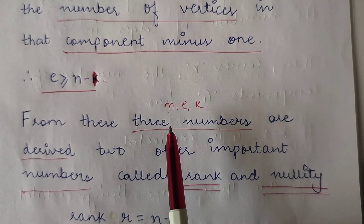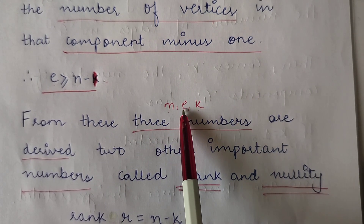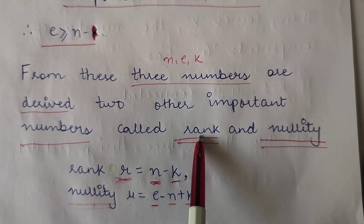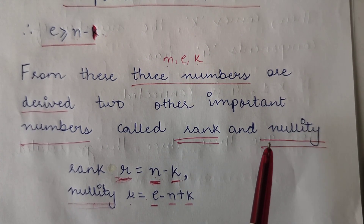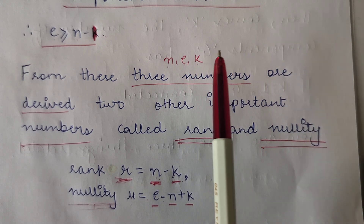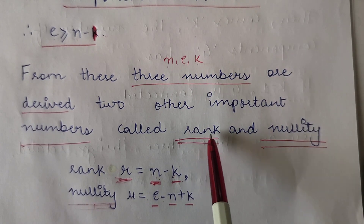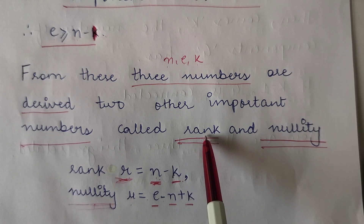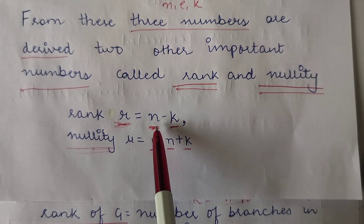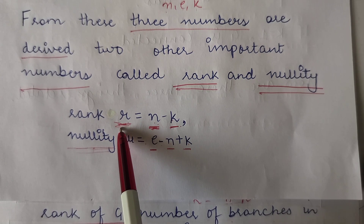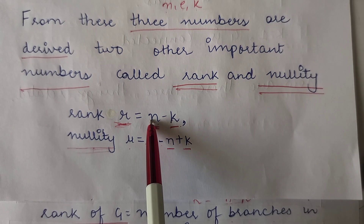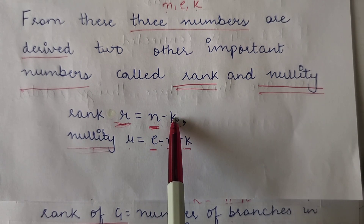From these three numbers — the number of vertices, the number of edges, and the number of components — two other numbers are derived, and these are called the rank and nullity of the graph. The formula to find the rank of a graph is N minus K. Rank is denoted by R, so R equals N minus K, meaning the rank equals the number of vertices minus the number of components.